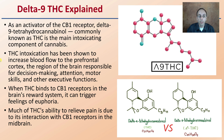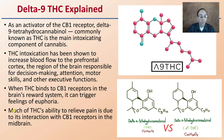THC intoxication has been shown to increase blood flow in the prefrontal cortex region of the brain, which is responsible for decision-making, attention, motor skills, and other executive functions. When THC binds to the CB1 receptors in the brain's reward system, it can trigger feelings of euphoria. Much of THC's ability to relieve pain is due to its interaction with the CB1 receptors in the midbrain.